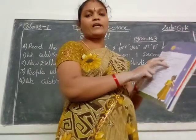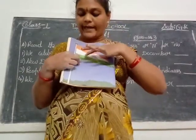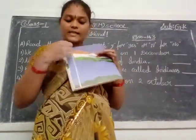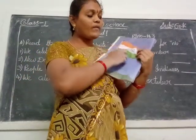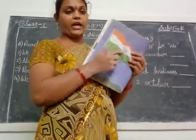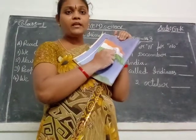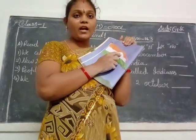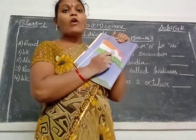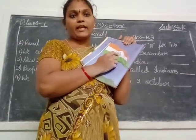Let us read about our flag. It is called the Tricolor — why? Because three colors are there: saffron, white, and green. There is a blue wheel — what is it called? Ashok Chakra. It is placed in the center, in the white color. This Chakra has lines called spokes. How many spokes are there? Twenty-four spokes are there in the Ashok Chakra.